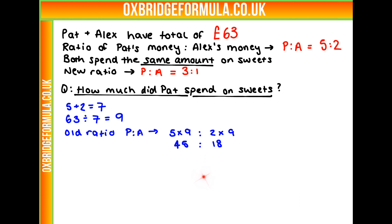Now, we know they both spent the same amount on sweets. We don't know what that number is, but we can represent that with X. 45 take away X is going to be what Pat's remaining total is, and 18 take away X is going to be what Alex's is.